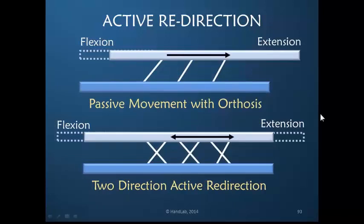If we look at the passive motion, there's this much that's gained - very hard to maintain, perhaps, because there's been no differential glide. But with active redirection, we have two motions of direction that are being gained simultaneously without canceling out the other.